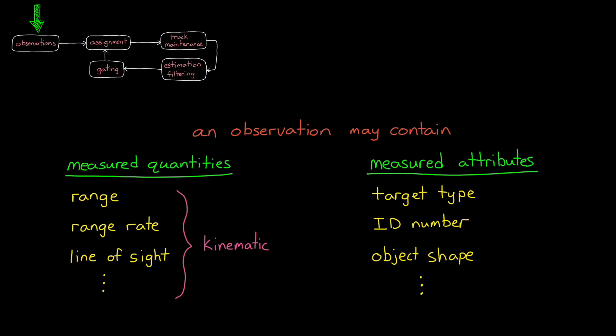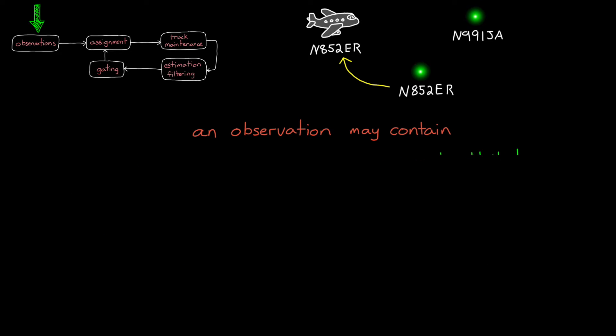And this is what I was hinting at earlier when I said that you might get the tail number of an aircraft, or some other identifying information with an observation. Getting a tail number is pretty unambiguous for data association. But other types of attributes might still require some interpretation.